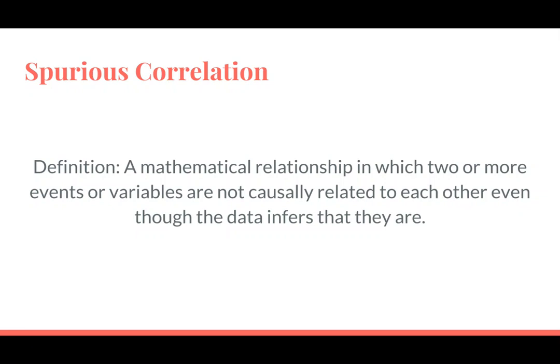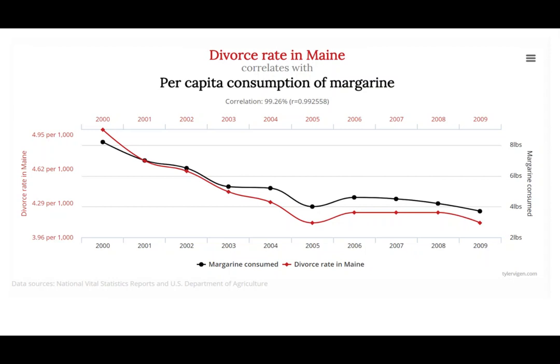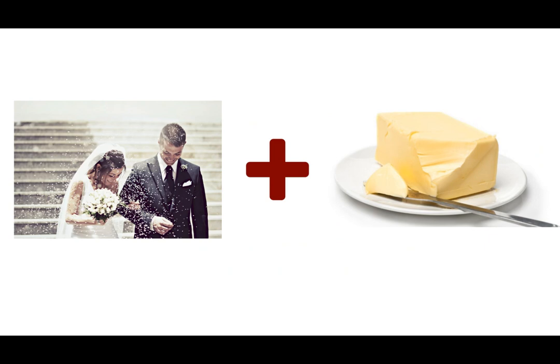Here's an example. Taking data from the National Vital Statistics reports and the US Department of Agriculture, the divorce rate in Maine directly correlates with the per capita consumption of margarine. Even though we know that these two things have nothing to do with each other, the data suggests that they do.